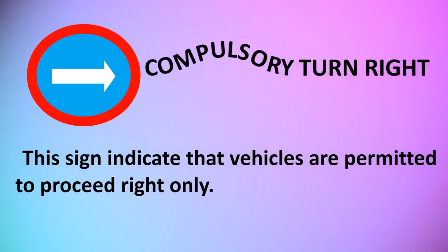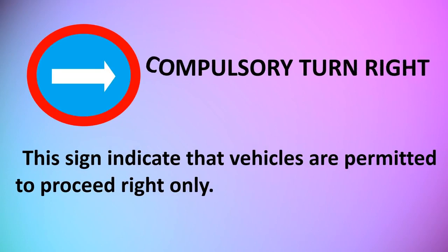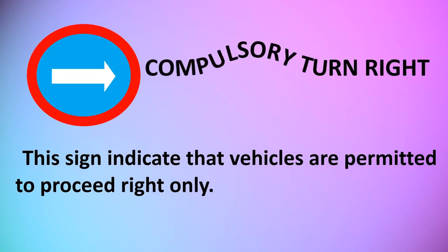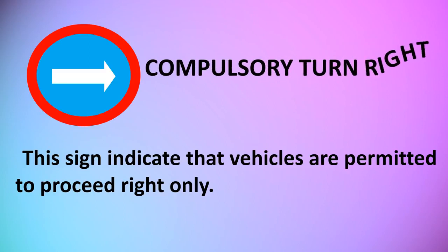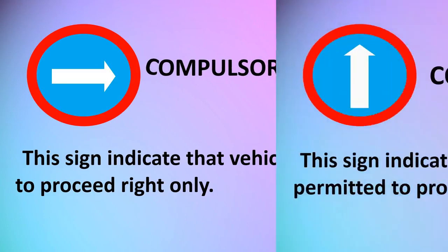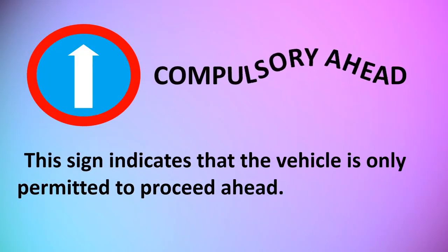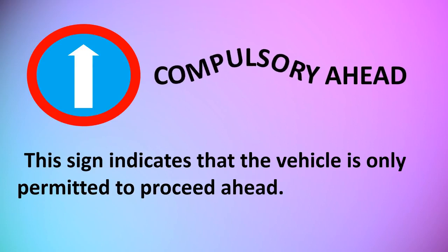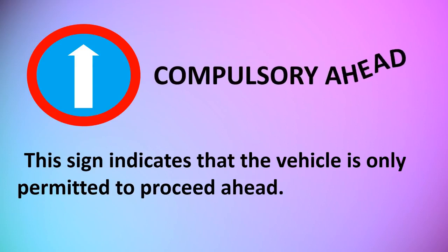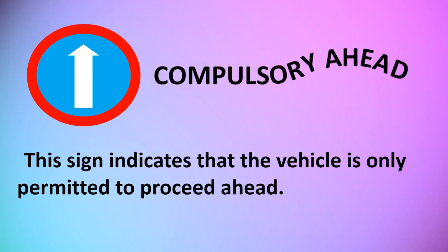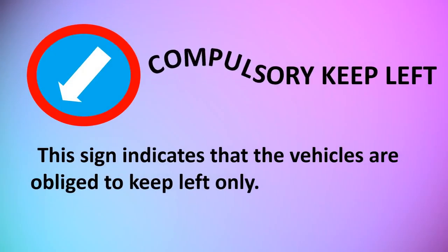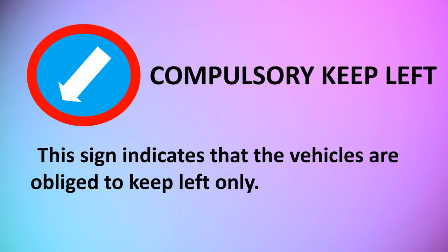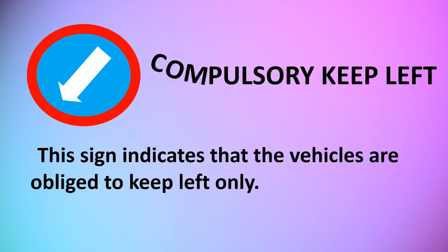Compulsory Turn Right: this sign indicates that vehicles are permitted to proceed right only. Compulsory Ahead: this sign indicates that the vehicle is only permitted to proceed ahead. Compulsory Keep Left: this sign indicates that vehicles are obliged to keep left only.